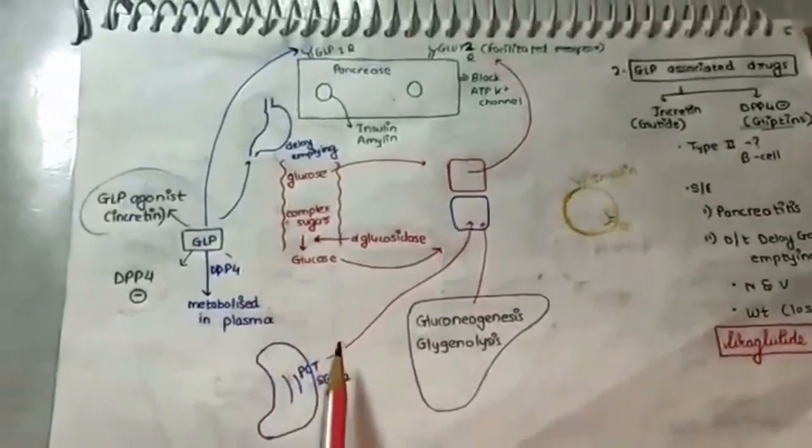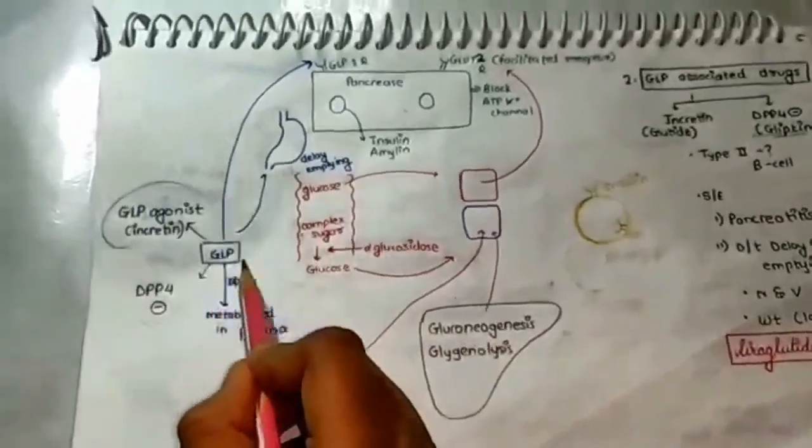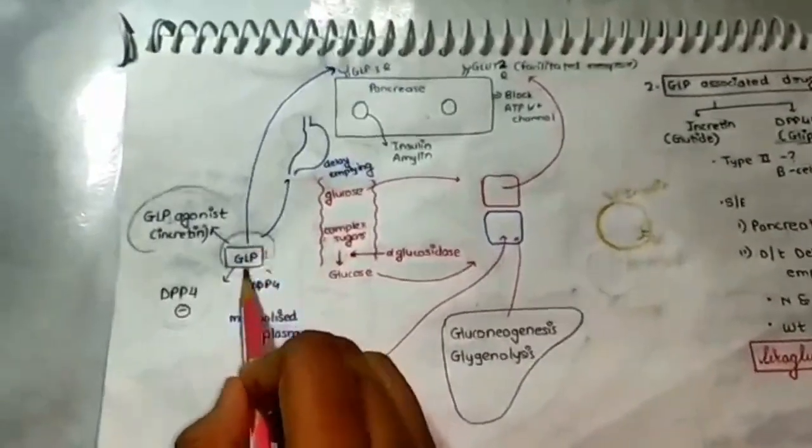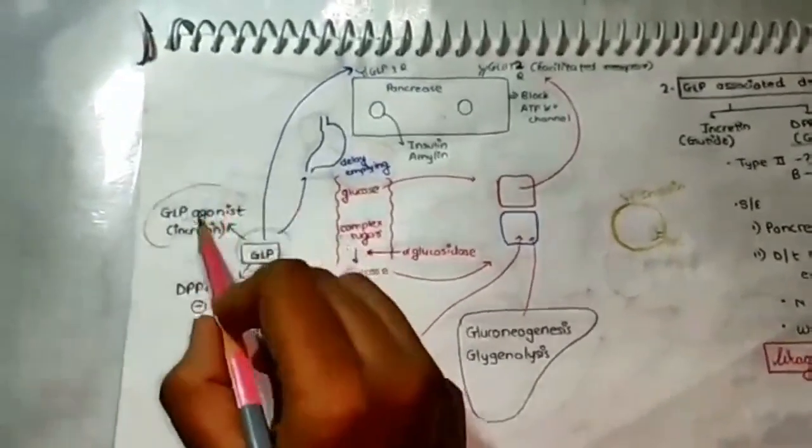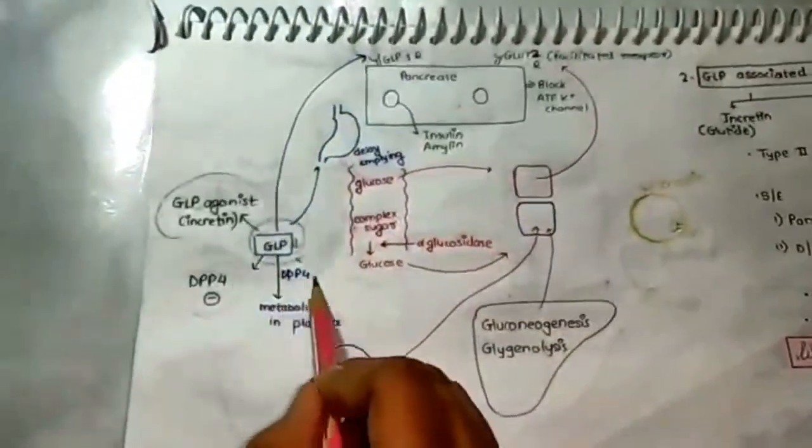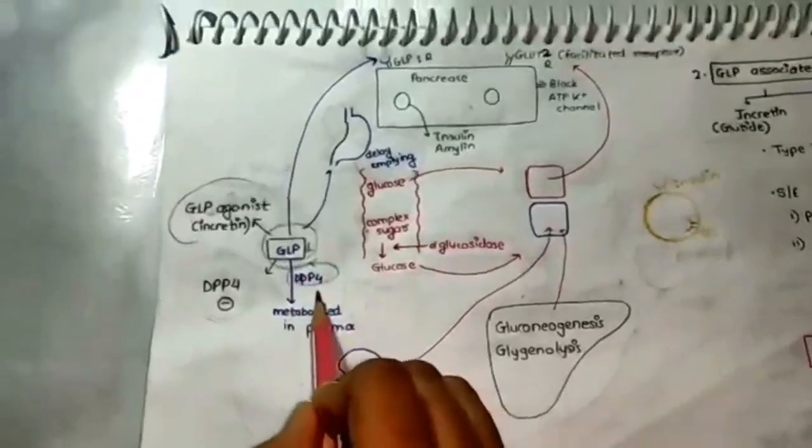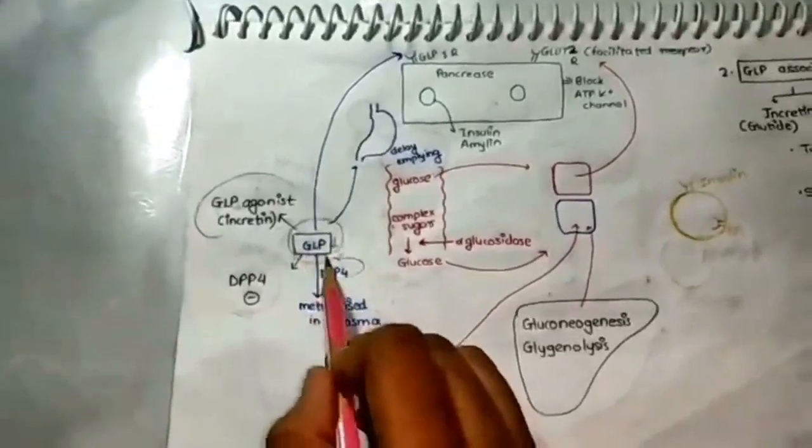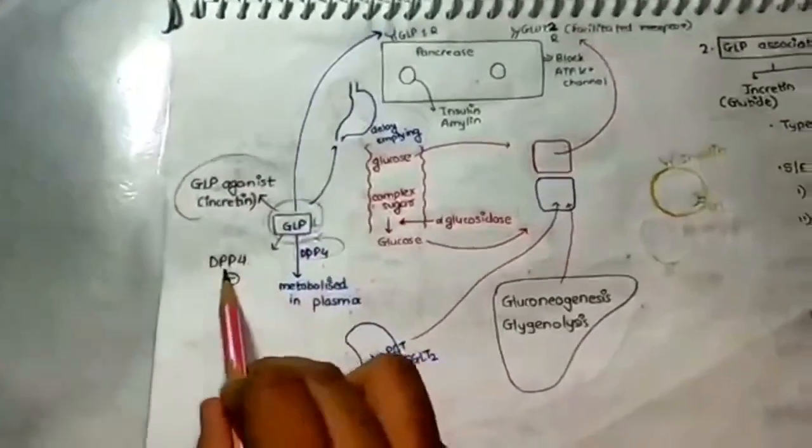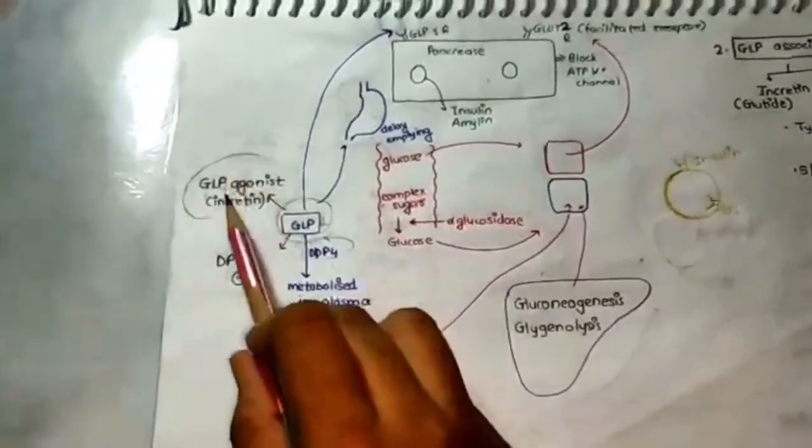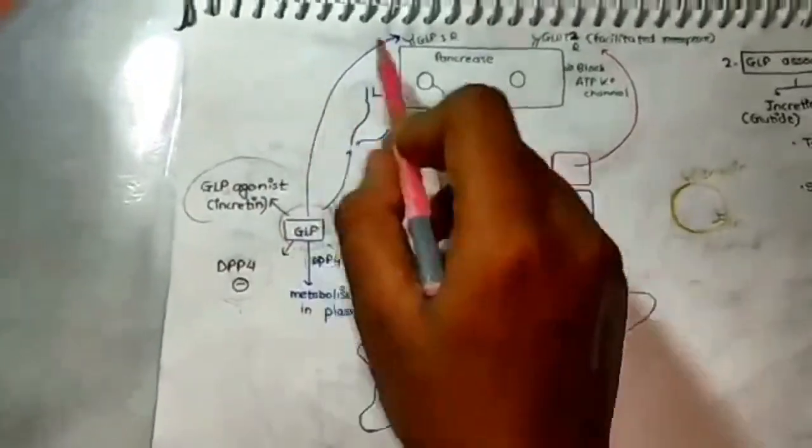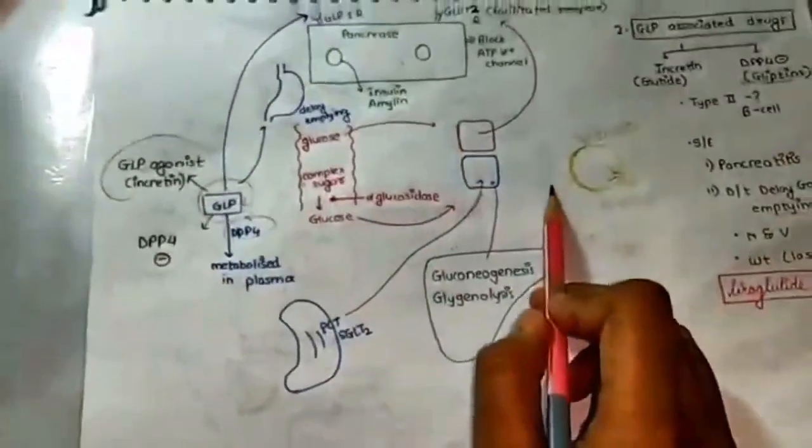Now the second class of drug. We can use second class of drug related to glucagon-like peptide 1. This glucagon-like peptide 1, we can use it in two ways. First, we can either use GLP-1 agonist or incretin agonist. Or we can also make use of DPP-4 antagonist. Sorry I forgot to tell you one thing. This GLP-1 is metabolized in plasma with the help of an enzyme called DPP-4. So if we use DPP-4 antagonist or GLP-1 agonist, this will lead ultimately to the release of insulin from beta cell and decrease in our glucose.